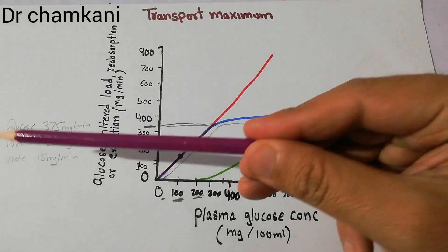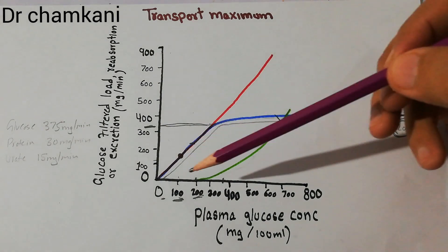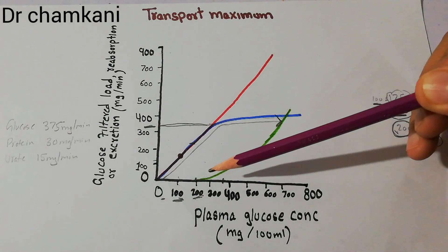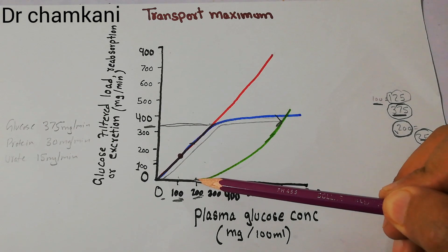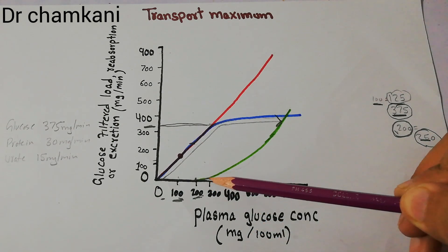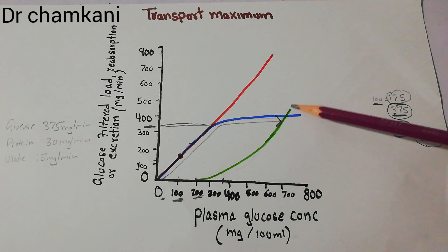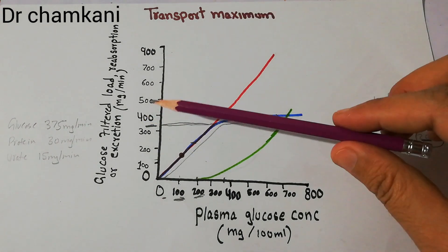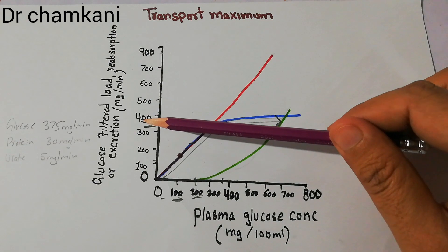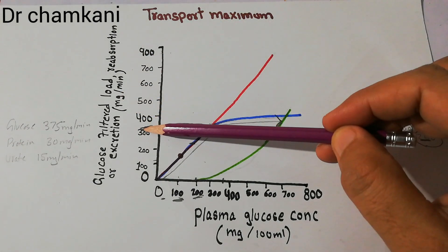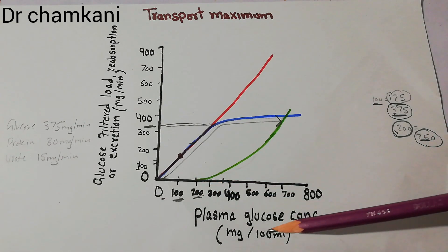Transport maximum is different for glucose, different for proteins, different for urates, lactate, sulfate — it is different for each substance. Initially when plasma glucose concentration was increasing, there was no glucose coming in urine. But when the plasma glucose concentration reaches 200 mg per 100 ml, glucose starts appearing in the urine, and with increasing concentration the amount of glucose excreted in urine increases. The transport maximum for glucose is 375 mg per minute, but the threshold — the point at which glucose starts appearing in urine — is around 200 mg per 100 ml.